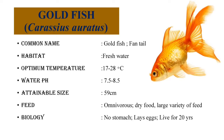Goldfish, which is scientifically called as Carassius auratus. The common name of the fish is Goldfish or Fan Tail. It belongs to freshwater habitat. The optimum temperature in which it grows falls between 17 to 28 degrees. The pH of the water should be between 7.5 to 8.5. It attains a maximum size of 59 cm. It feeds on dry food and a large variety of feed. Basically, they are omnivores. The biology of Goldfish is that it does not have a stomach, it lays eggs, and it can live for 20 years.